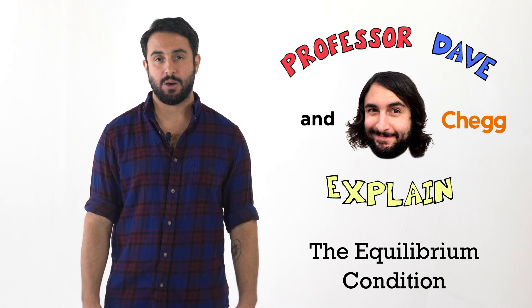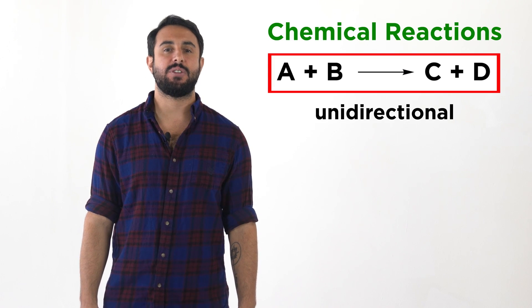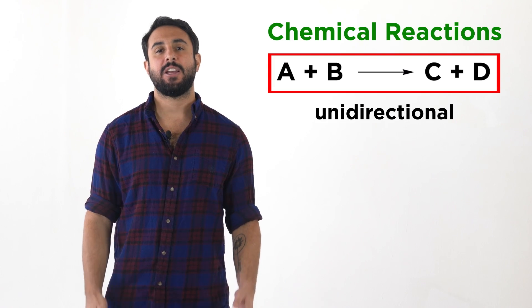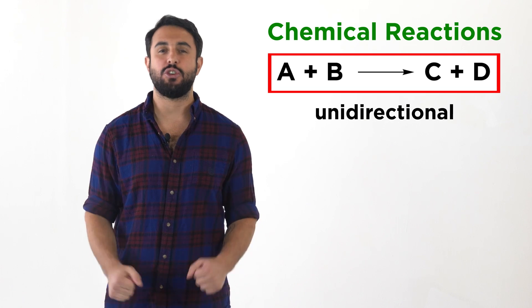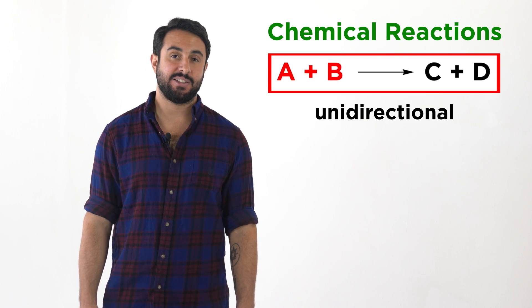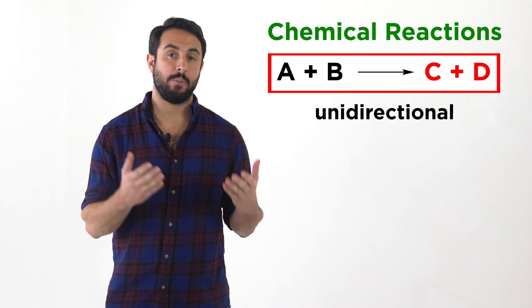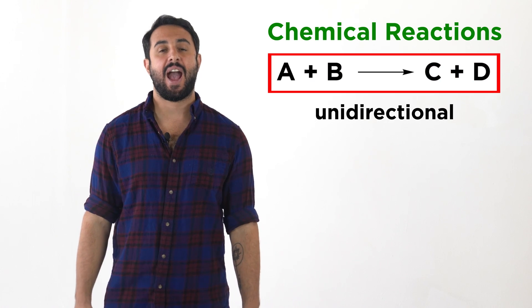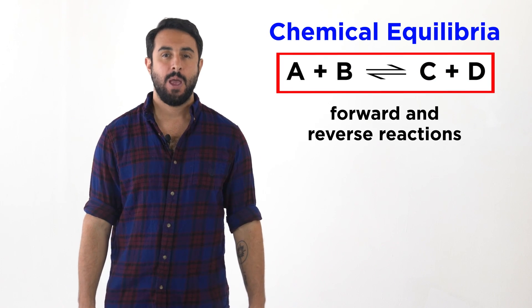Professor Dave and Chegg here. Many chemical reactions that we have studied so far can be considered essentially unidirectional. There are reactants, and these get used up to form products, after which the reaction is over.